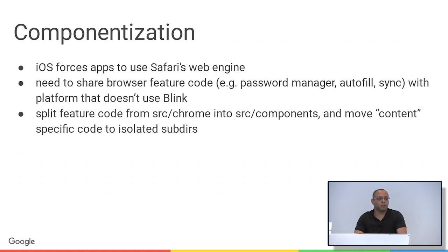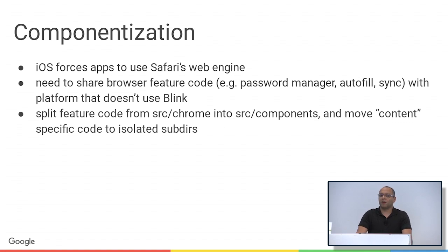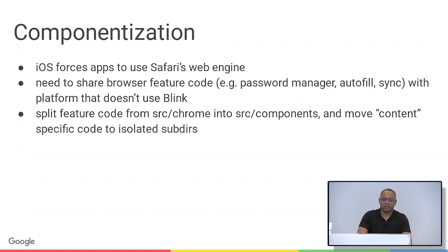Another large multi-year re-architecture was componentization. That came about because we wanted to develop a browser on iOS, but on iOS you have to use the browser engine provided by the system — we couldn't use Blink. All our code for things like password manager and autofill had hooks inside Blink, so we separated that from source/chrome into source/components and isolated the parts that depended on Blink so we could replace them with parts that work on iOS.